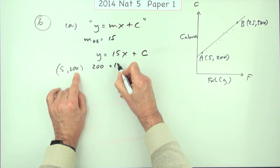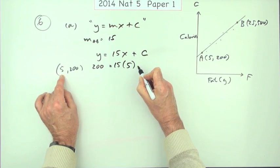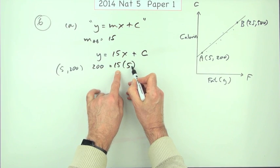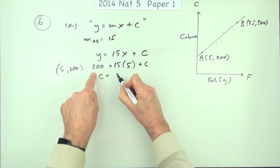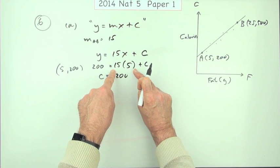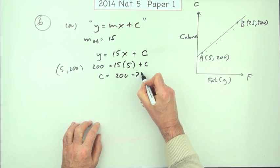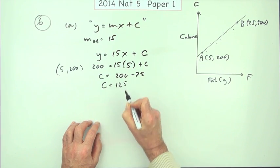So Y is 200, X is 5, it's quite handy, you quite often do that for substitution instead of just putting times, plus C. Which means that C will be the 200, take away 5 times 15, take away 75. So that C will be 125.